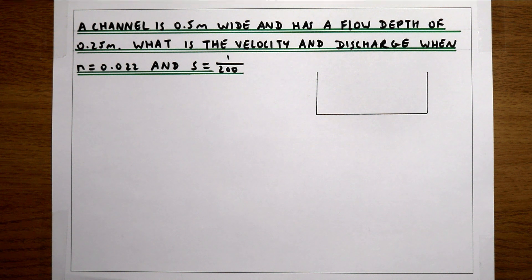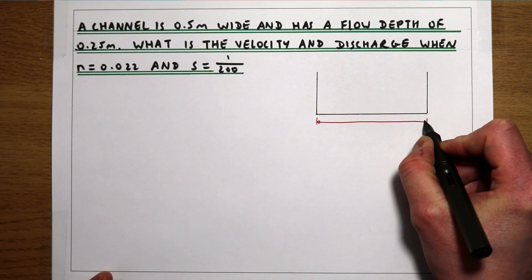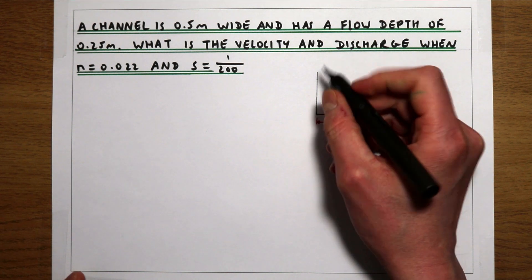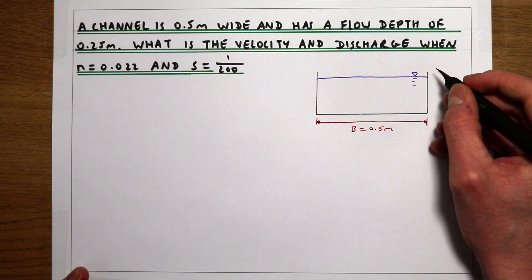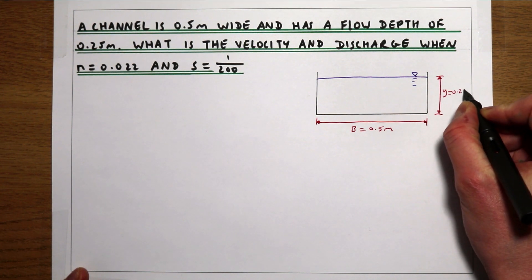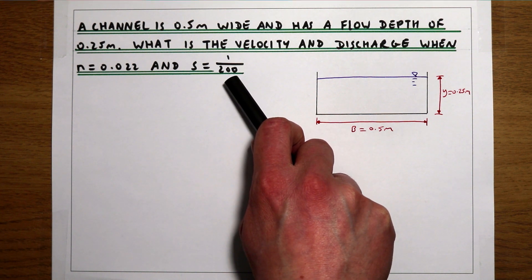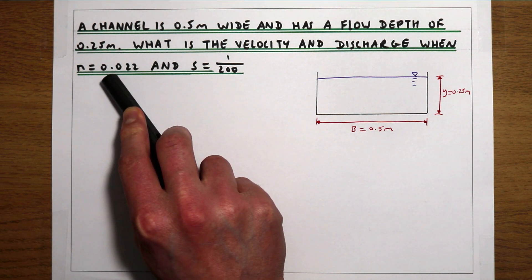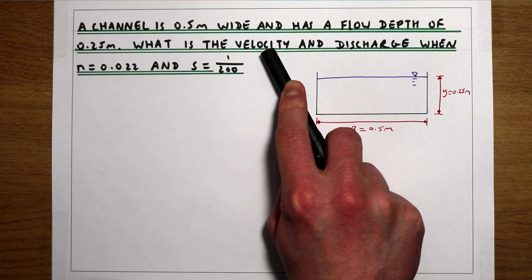In this example we have a channel that is 0.5 metres wide, so the width B is 0.5 metres. The flow depth y is 0.25 metres. The slope of the channel is 1 in 200, so for every 200 metres the channel moves in x it drops by 1 metre. Manning's n value is 0.022. From those parameters, the question asks us to calculate the velocity of the fluid in the channel and ultimately the discharge.